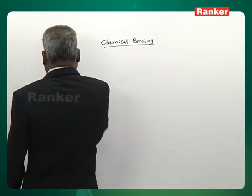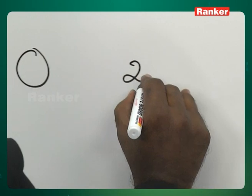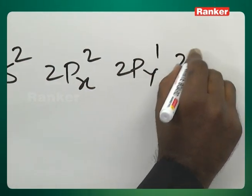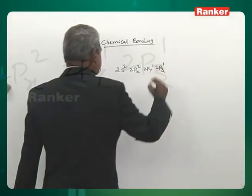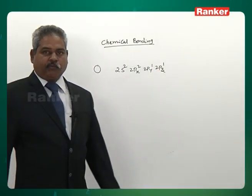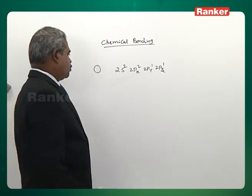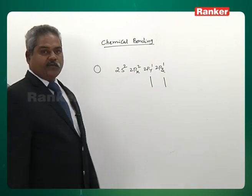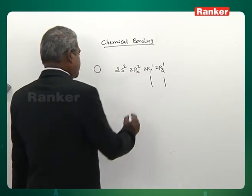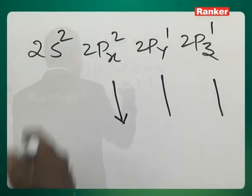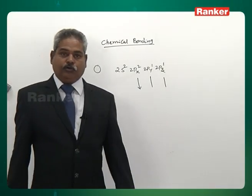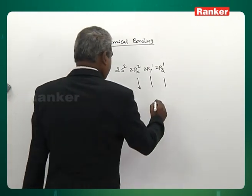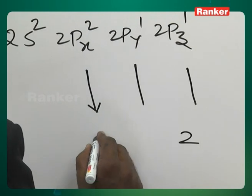Oxygen: 2s2, 2px2, 2py1, 2pz1. Two unpaired electrons are used in sharing; there are two pairs that could be donated, but only one pair is donated. After donating, oxygen gets a formal positive charge — it cannot donate further. Maximum covalency of oxygen is 3 (as in H3O⁺).